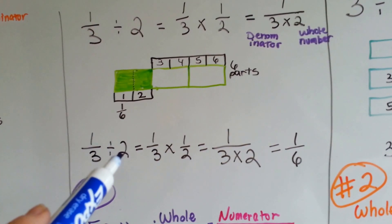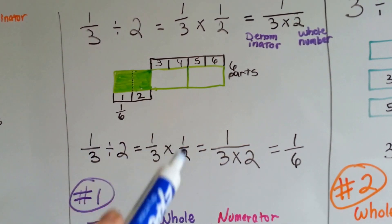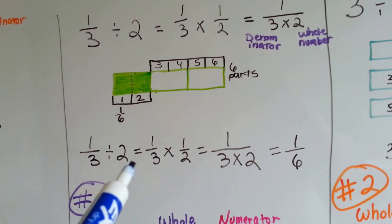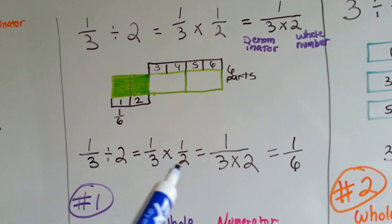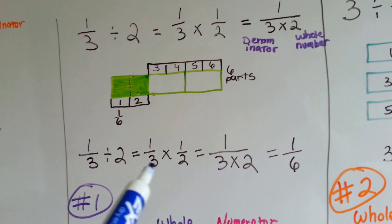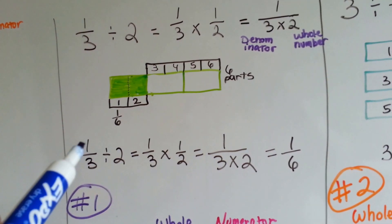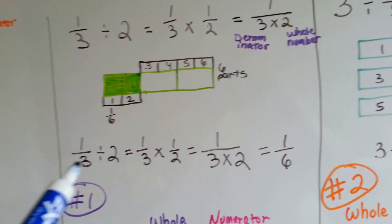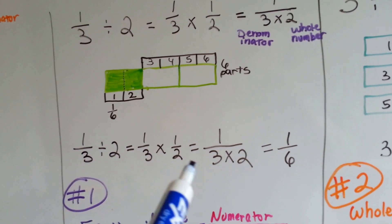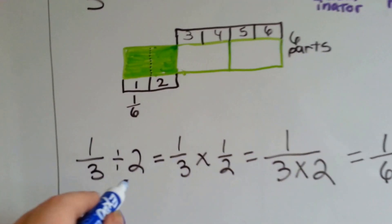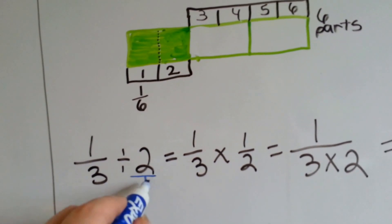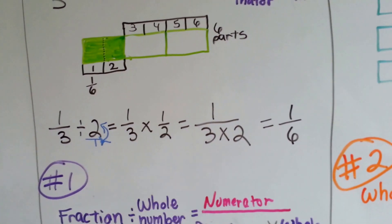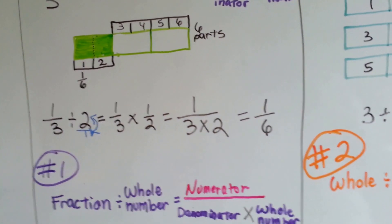1 third divided by 2. This is the old way — you can do 1 times 1 and 3 times 2 to get the 6. But it's a lot easier to just think of 1 as the numerator and the denominator times the whole number as the new denominator. All they did was turn this into a fraction and then make a reciprocal of it. My way is much quicker.